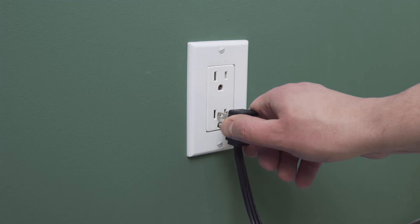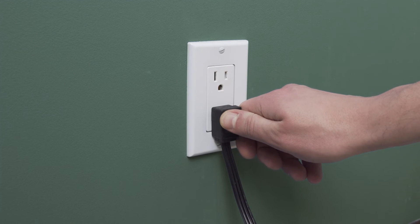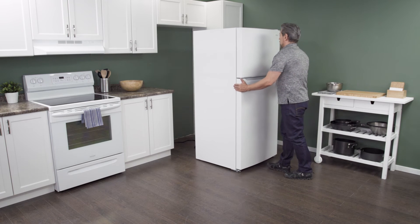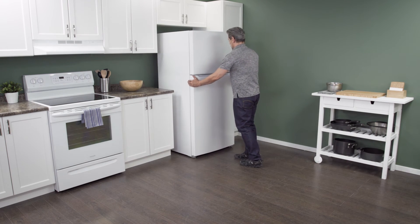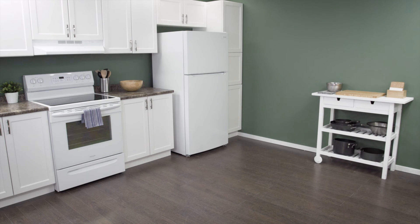Plug in the cord to reconnect the power. Now slide it back into place. Make sure to leave a couple of inches of space between the refrigerator and the wall. This will allow for proper air flow. Now test the refrigerator to see if it's working properly.